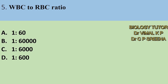Fifth question: WBC to RBC ratio — it's a very common question. A. 1 is to 60, B. 1 is to 6,600, C. 1 is to 6,000, D. 1 is to 600. Here answer is D — 1 is to 600. WBC to RBC ratio is 1 is to 600.